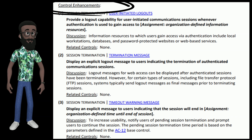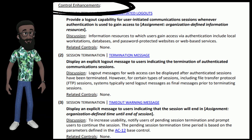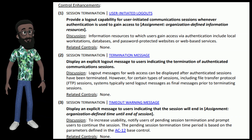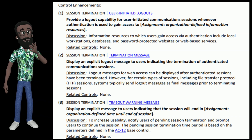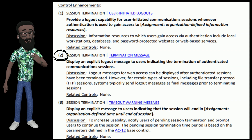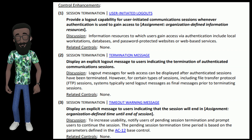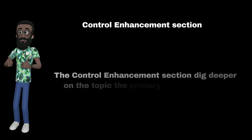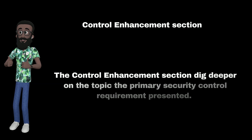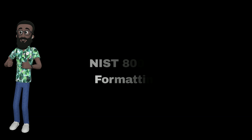Control Enhancements are separate but related security controls — AC-12(1), AC-12(2), and AC-12(3). The Control Enhancement section digs deeper on the topic than the primary security control requirement. Now that you understand how the NIST 800-53 controls are formatted, let's talk about RMF Step 3.